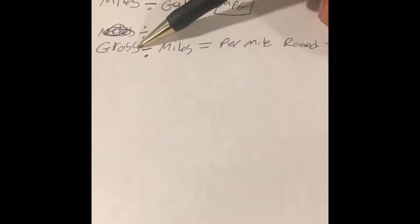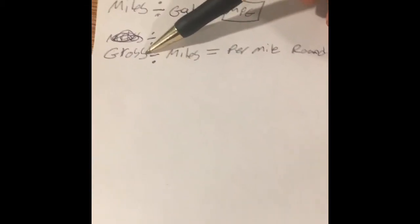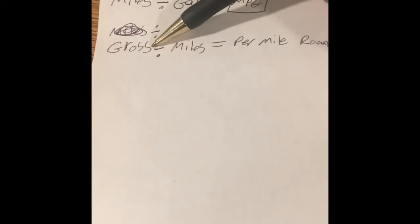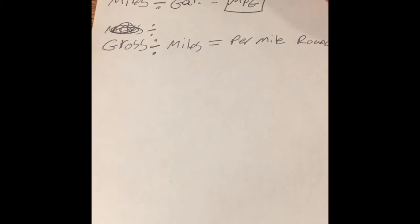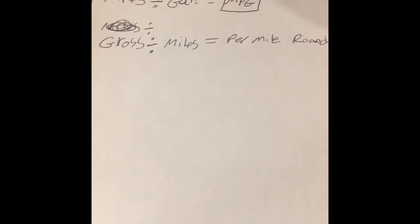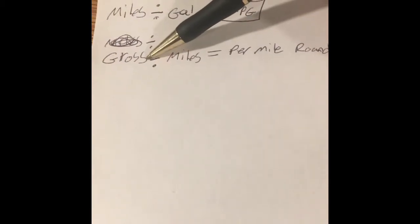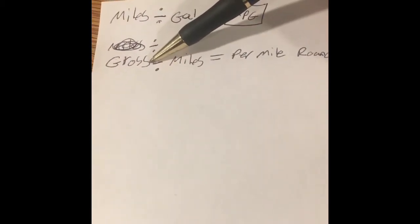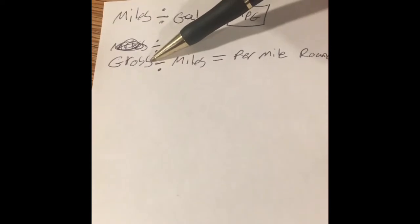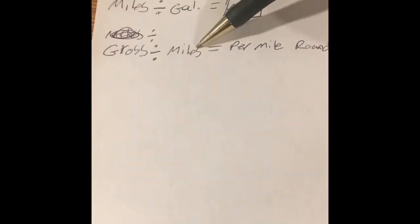My real life example is going to be weekly, so my miles are going to be weekly, my gallons of fuel burned is going to be in a week's amount of time, and then my gross is what I made for that week after my brokerage fee. Then my miles, or how many miles I put on in a week, equals my per mile round trip.